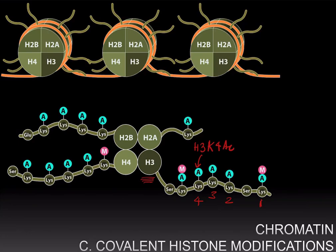On the other hand, if you had a methyl group, you might say H3K4me, and you could have one, two, or three methyl groups attached, and you would change the notation accordingly.